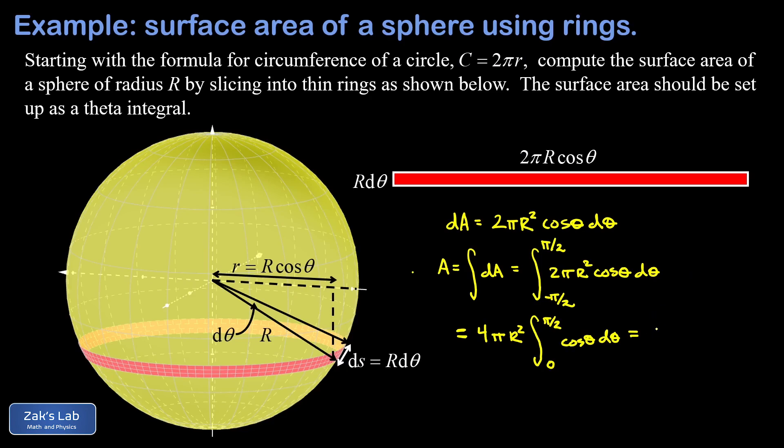Now we just have to guess the antiderivative and evaluate across the endpoints. I end up with four pi R squared, and the antiderivative of cosine is just the sine function, so I have sine theta, and we're evaluating as theta goes from zero to pi over two.